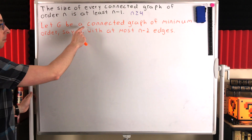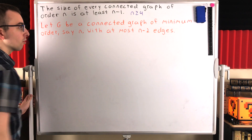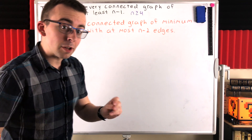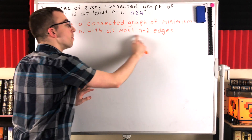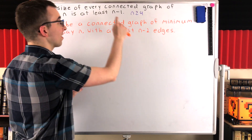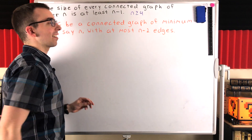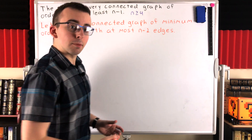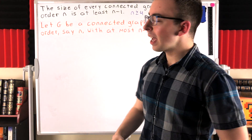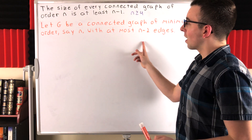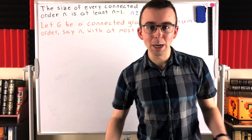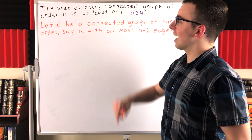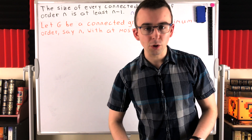There might be multiple counterexamples with the same order — we're just going to say g is one of them. In order for it to be a counterexample, it's got to be a connected graph. We'll call its order n, and for it to be a counterexample, it's got to have at most n minus 2 edges. The idea of this proof by minimum counterexample is we want to show that this is in fact not a minimum counterexample, which is going to produce a contradiction, thus showing that our claim must be true.